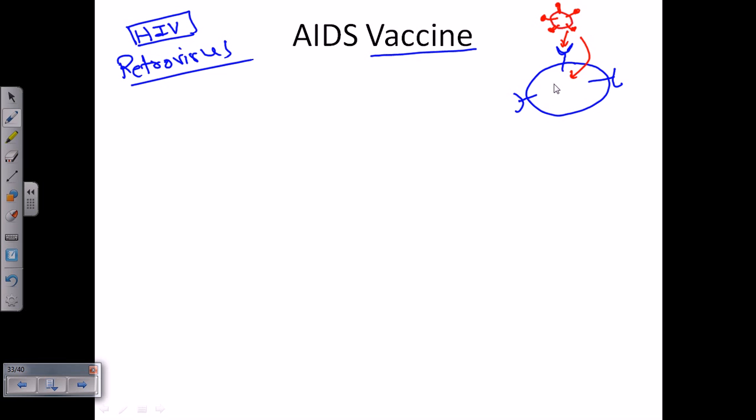Once it is inside the cell, it starts making its own components and then it will integrate its DNA into the eukaryotic DNA. Unlike other viruses that enter the eukaryotic cell and break down the DNA, HIV never does that.